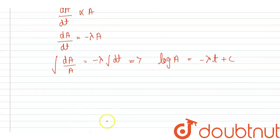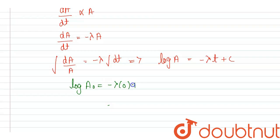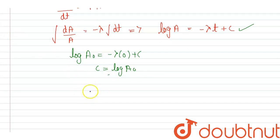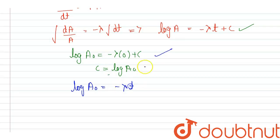Then we will have log A equals minus lambda T plus C. Now, on putting T equals 0 for A0 to find the value of C, we get log A0 equals minus lambda times 0 plus C. From this, C equals log A0. On substituting C back into the equation, we get log A equals minus lambda T plus log A0.